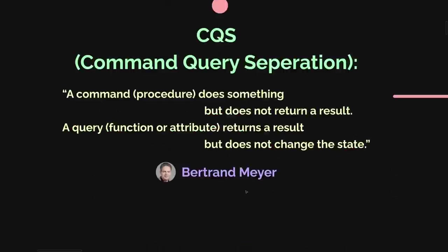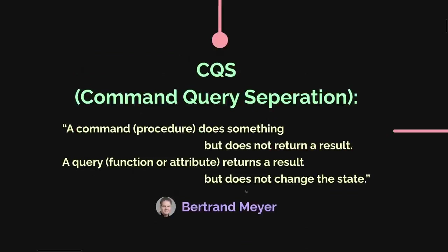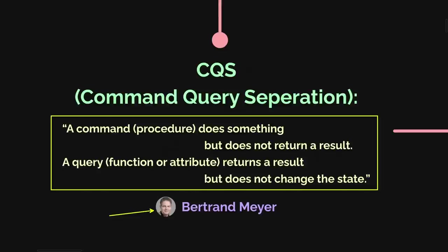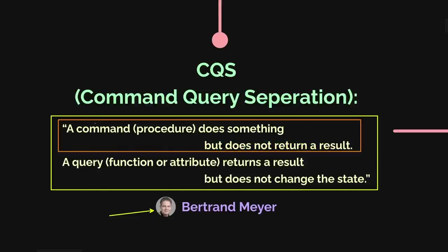Let's start with CQS, which was first invented by Bertrand Meyer and originally only talked about methods. You have two kinds of methods: ones that change data, manipulate the database, or change the state of the object. Those are called commands and they're not allowed to return a value — basically void.